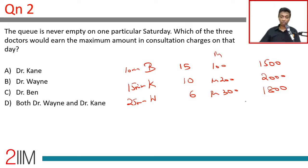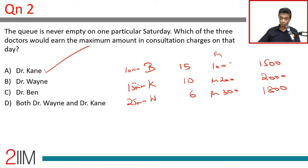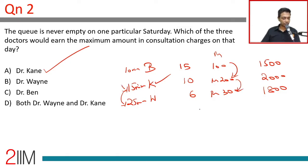Who makes the best money? Maximum consultation charges go to Cain — seeing a patient every 15 minutes and making 200 rupees each time. The amount doubles while the time taken goes up only by 50% compared to Ben. From Cain to Wayne, time goes up by two thirds while money only goes up by half. So more time, less money — therefore Cain is better off.